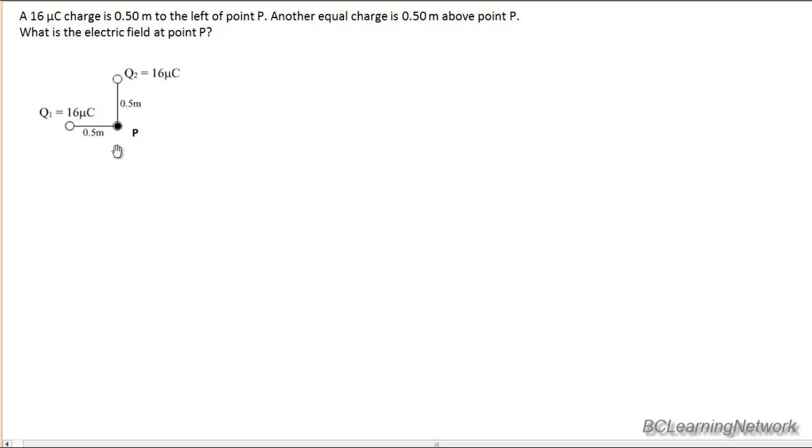And once we know those two electric fields at point P we can do a tip to tail vector diagram and determine our net electric field since electric field is a vector.